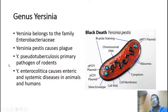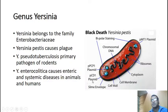Coming to the structure of Yersinia pseudotuberculosis, it has got all the structures which are present in bacteria: ribosomes, cytoplasm, cell membrane, cell wall, slime envelope, and it has also got plasmids — PCP1 and PMT1. It has got bipolar staining and chromosomal DNA. These plasmids help the bacteria against phagocytosis and also protect them against the complement.